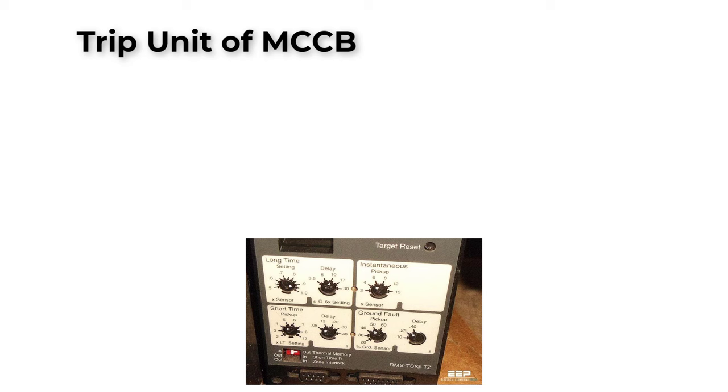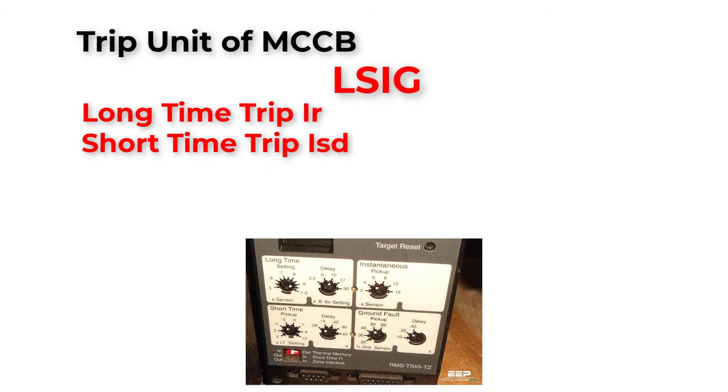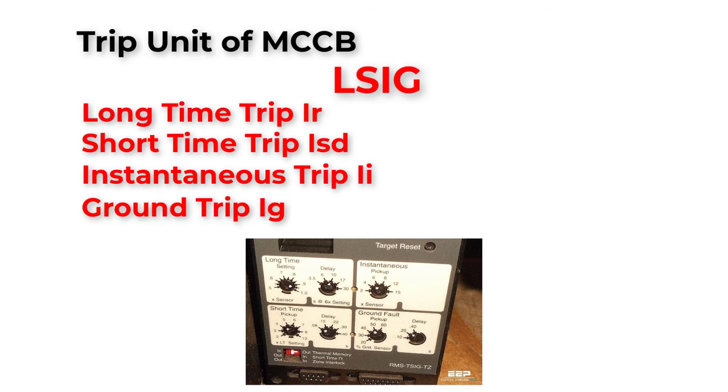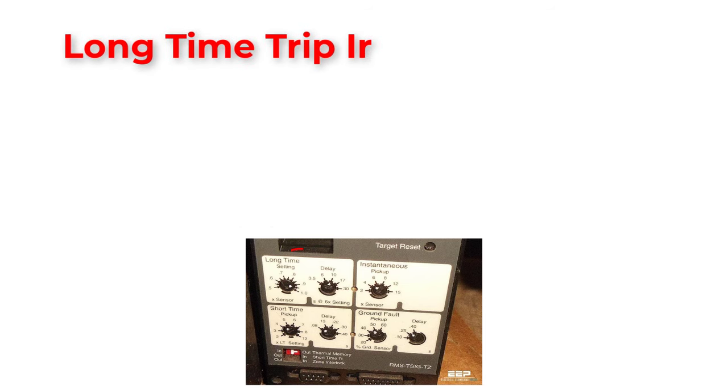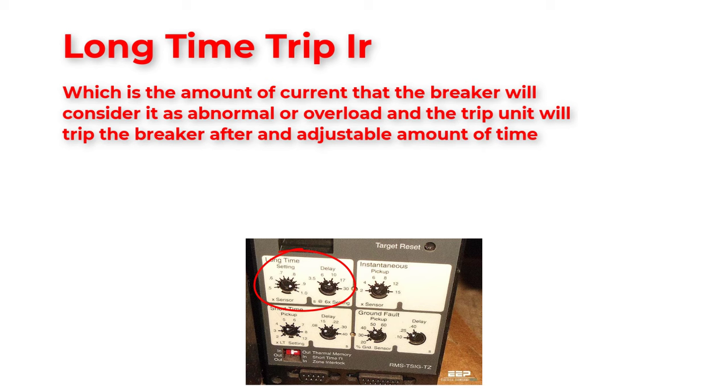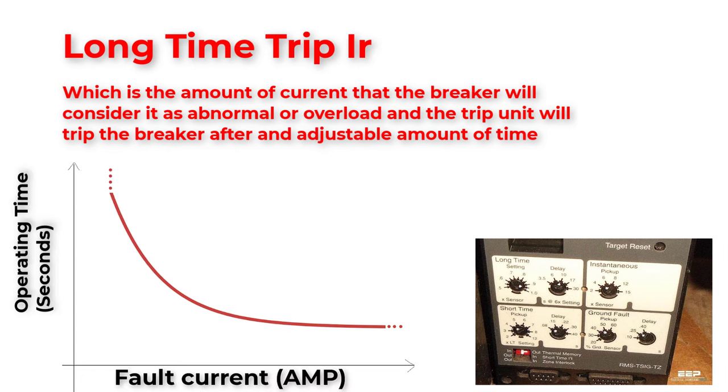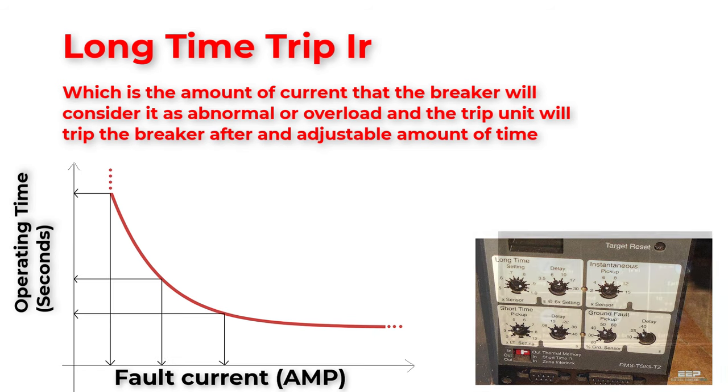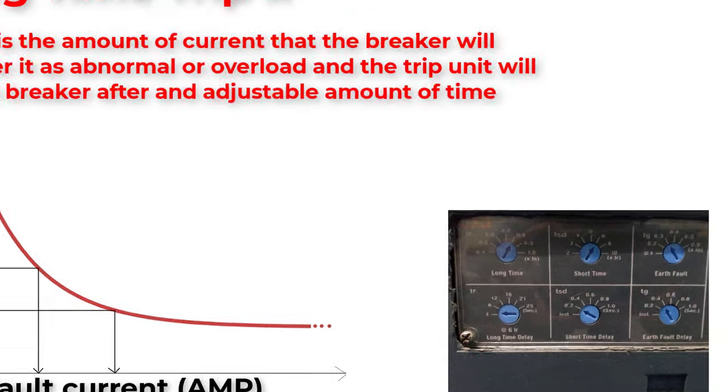The trip unit here is called LSIG or long time trip Ir, short time trip Isd, instantaneous trip Ii, and ground trip Ig. Let's start with long time trip current Ir which is the amount of current that the breaker will consider it as abnormal or overload. And the trip unit will trip the breaker after an adjustable amount of time. As you can see in this curve of long time trip or inverse definite minimum time, this starts at the long time trip current. As you can see, as the current increases, the trip time will be decreased. This time could be adjusted. Also, we can adjust the long time trip current Ir which will equal to a factor times In. In is the rated current.